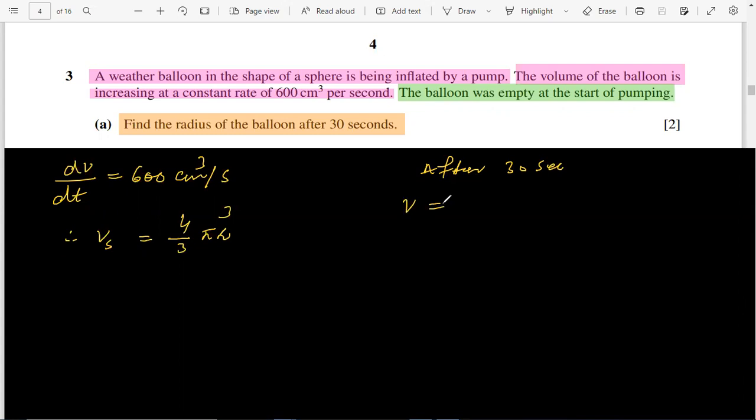Volume will be dV/dt, because it is a rate of change in volume, into time that is 30 seconds. So putting dV/dt here, that is 600 centimeter cube per second into 30 seconds. Seconds cancel, so this one is 18,000 centimeter cube.